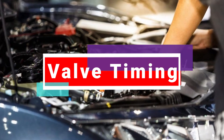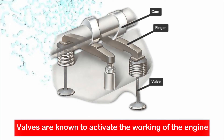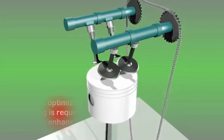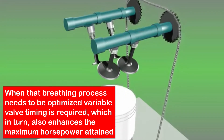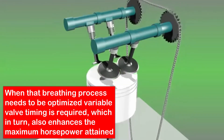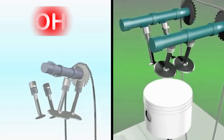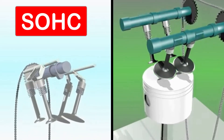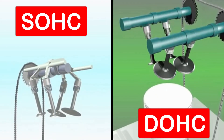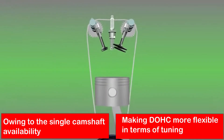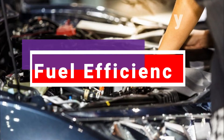Now we will compare them according to their valve timings. Valves activate the working of the engine, and the timing of the intake and outtake of gases depends on the shape and angle of the camshaft. When the breathing process needs to be optimized, variable valve timing is required, which also enhances the maximum horsepower attained. It is known that SOSC designs have less control over valve timing compared to DOSC, owing to the single camshaft availability, making DOSC more flexible in terms of tuning.